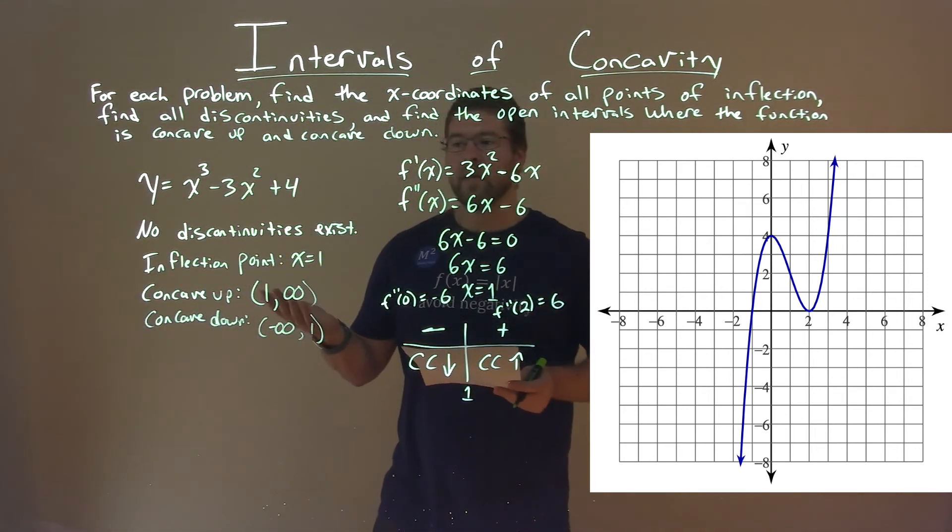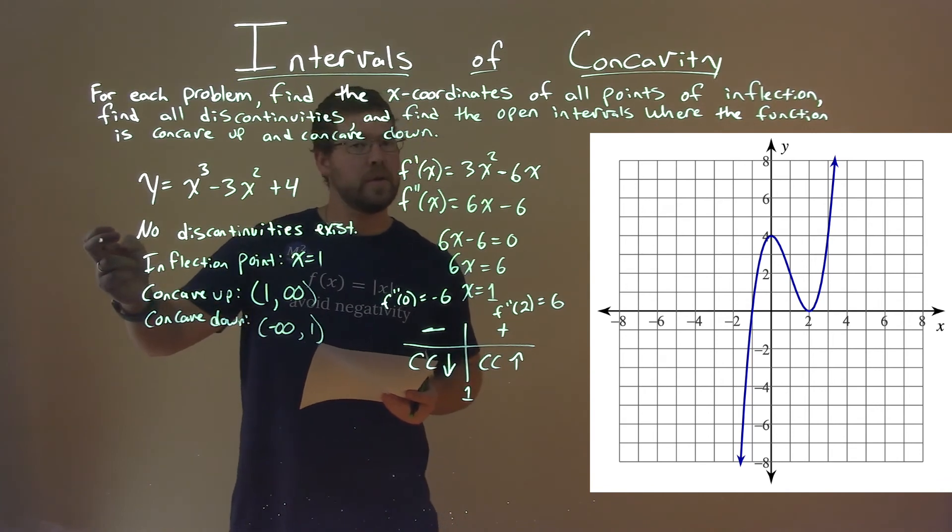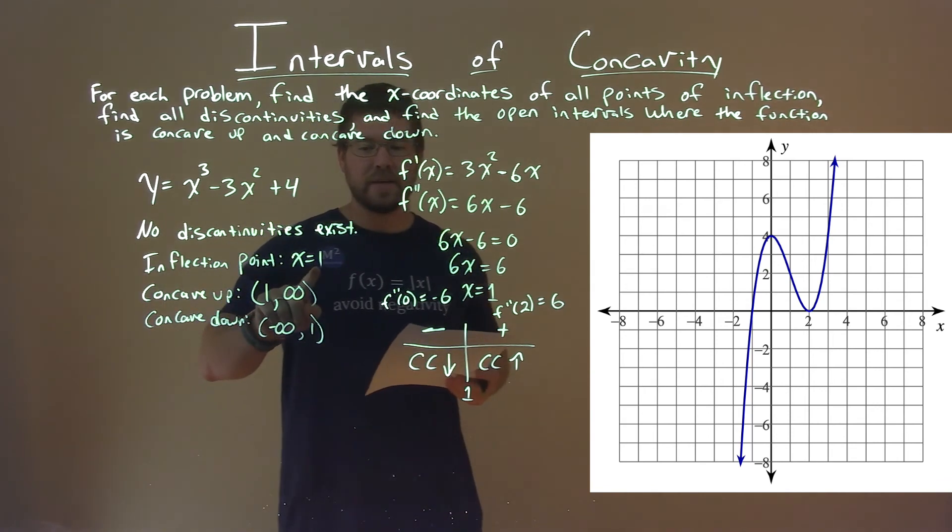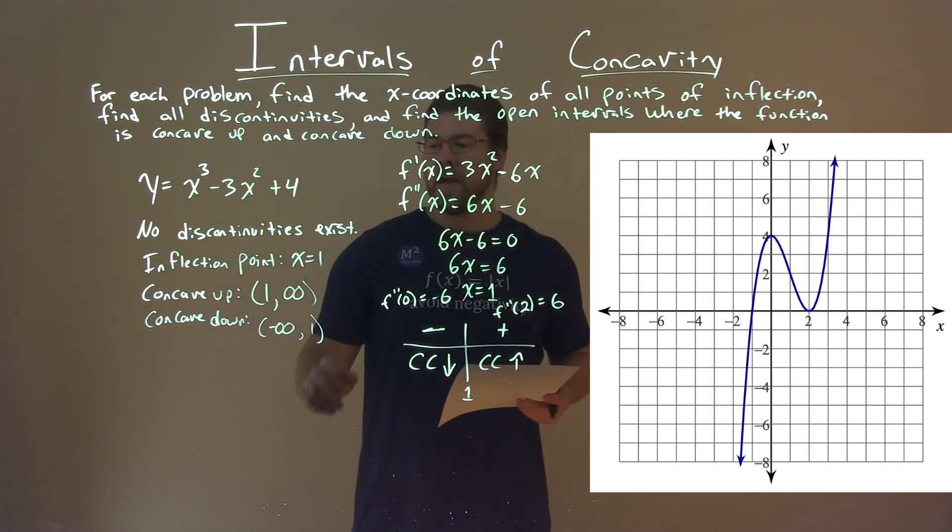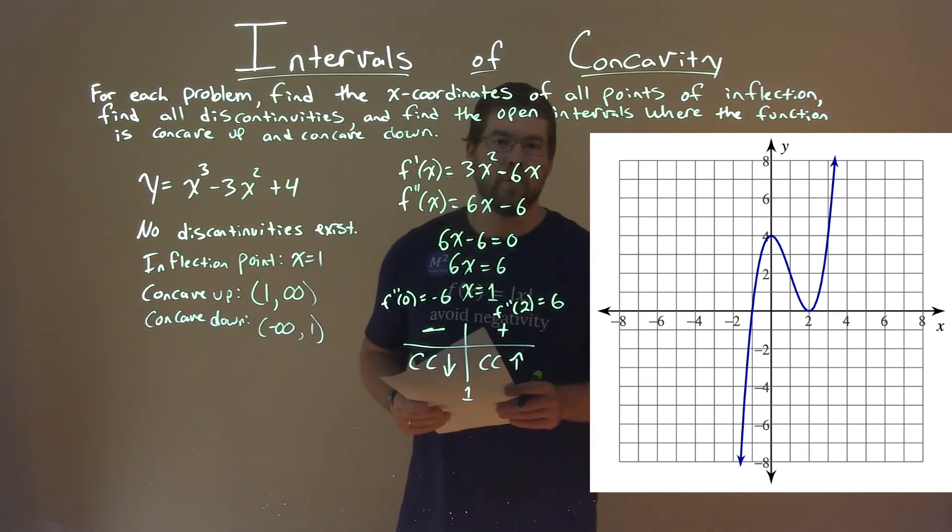And so, again, our final answer here is there are no discontinuities. Our inflection point is at x equals 1. We're concave up from 1 to positive infinity, and we're concave down from negative infinity to 1.